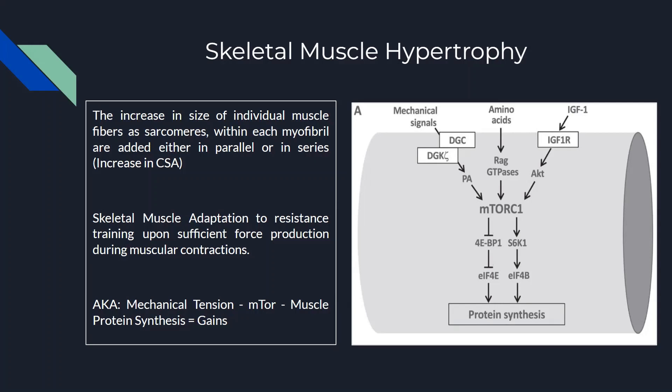It signals the muscle growth process. Skeletal muscle adaptation to resistance training is provided upon sufficient force production. Muscles produce force — what we call mechanical tension. Mechanical tension is just a fancy way of saying the muscle force that the muscle produces to face or counter external forces.